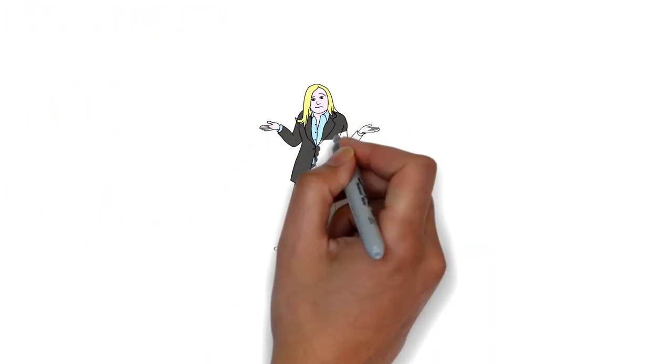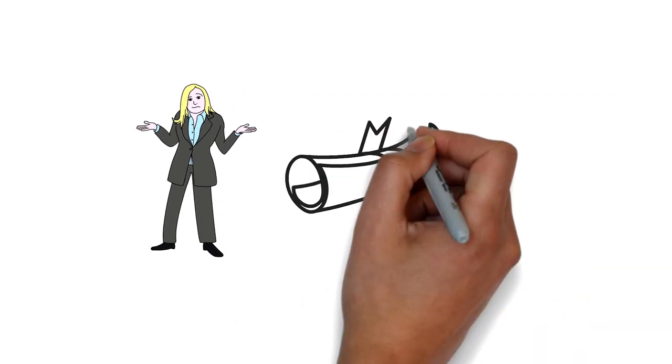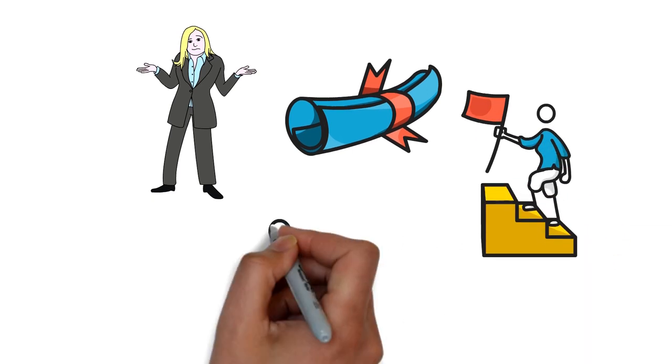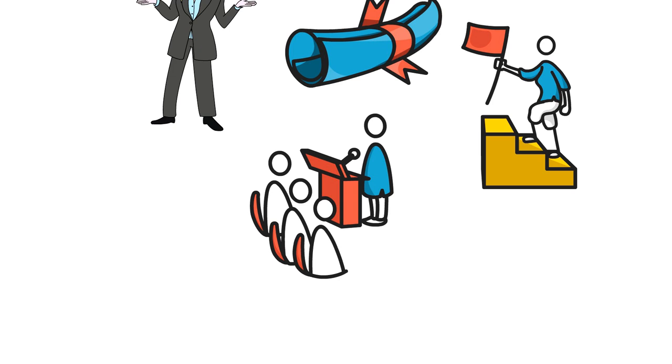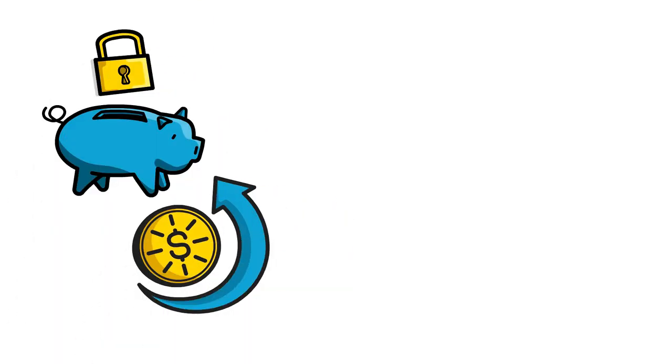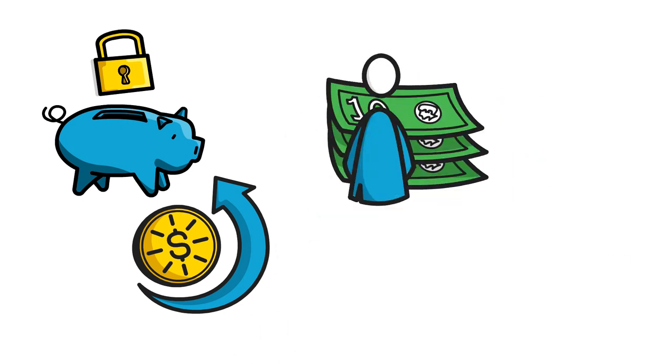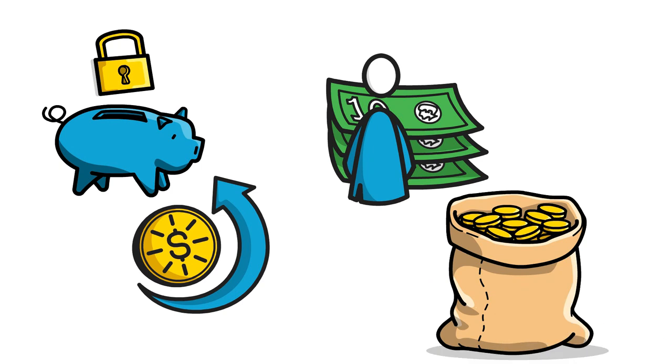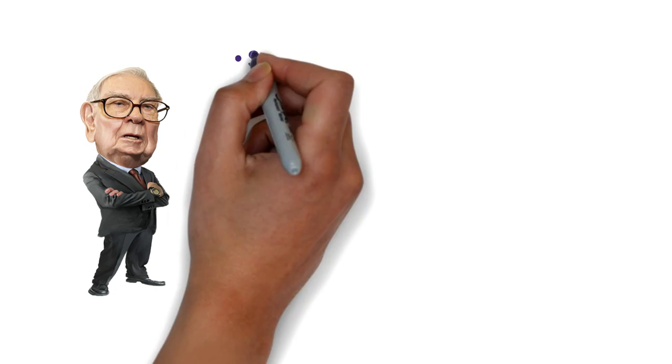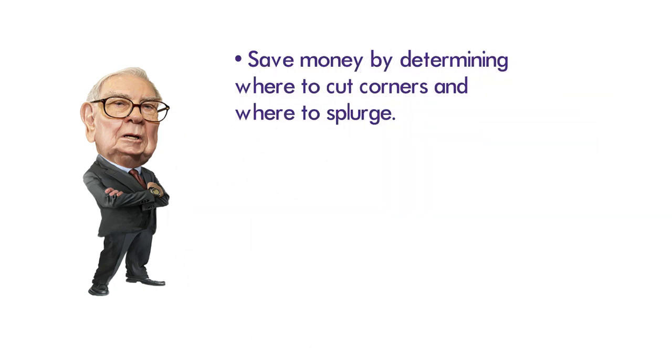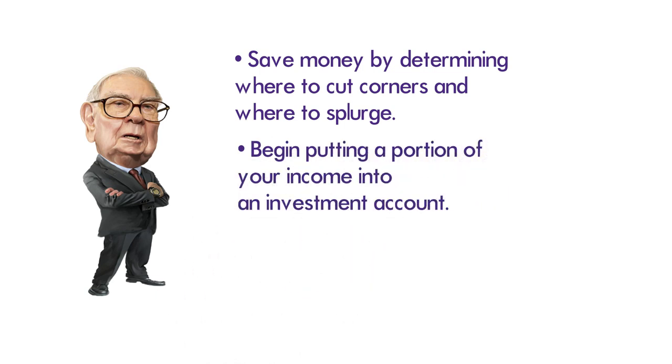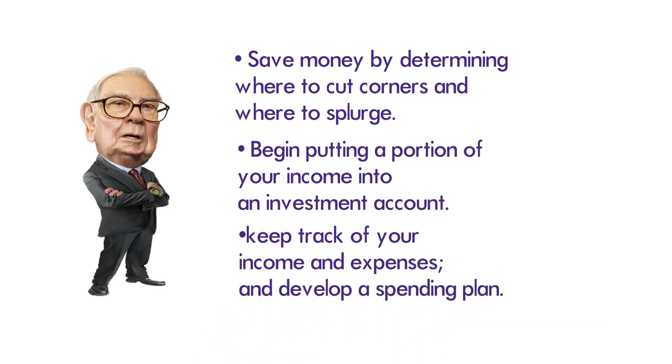Investing in yourself can mean a variety of things. Spend the time, money, and effort to obtain a certificate or degree if you can advance in your job through education. Spend the money if attending a conference will result in more contacts and clients. Saving is only important when those savings are used wisely. Sometimes that means spending your savings on yourself so that your efforts, like your investment dollars, compound by increasing your income. Warren Buffett inspired action steps: Save money by determining where to cut corners and where to splurge. Begin putting a portion of your income into an investment account. Keep track of your income and expenses and develop a spending plan.